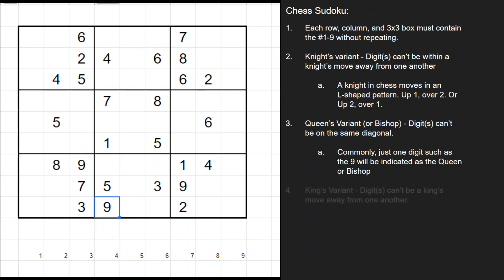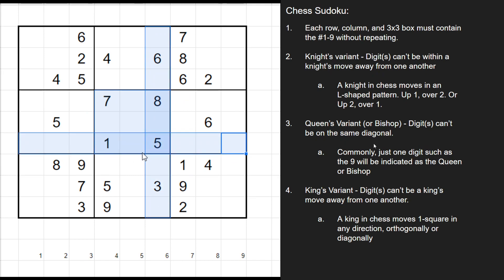Now one last chess variant is the King's variant where a digit or digits, all of them, can't be a King's move away from one another. A King moves in chess one square in any direction. So if we look at this 5, for instance, normally in the regular game of Sudoku, you'd say a 5 can't be in that 3x3 box, row, or column. But with the King's variant, you can also cross out this box, this box, and this box because it's one square away. So if we highlight it like that, maybe that's a little bit easier to see. Or this 9, for instance, it wouldn't be able to be in any of those squares because it's one square adjacent in any direction.